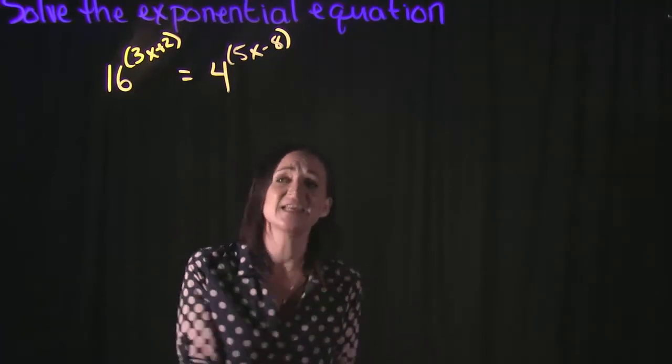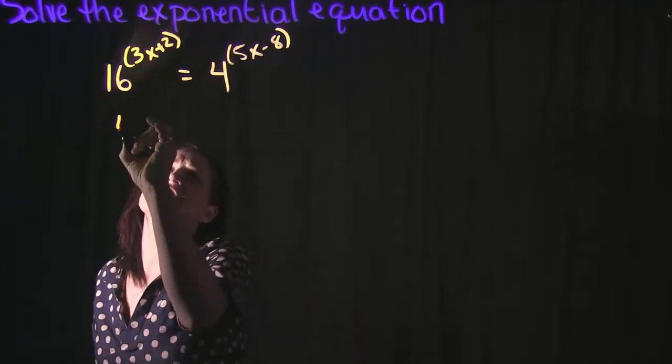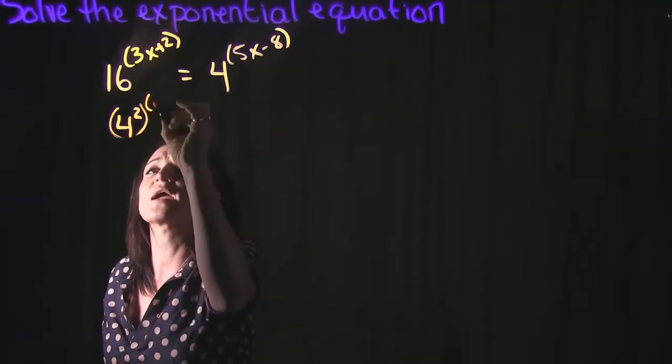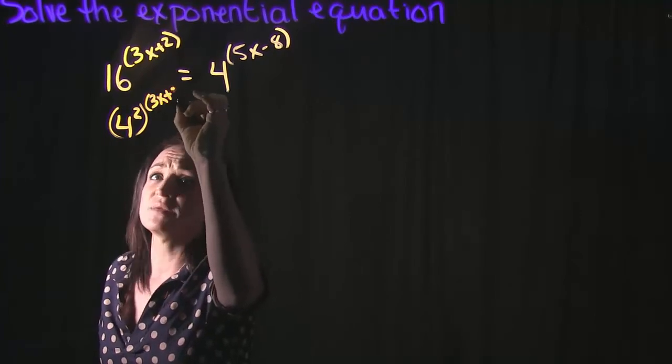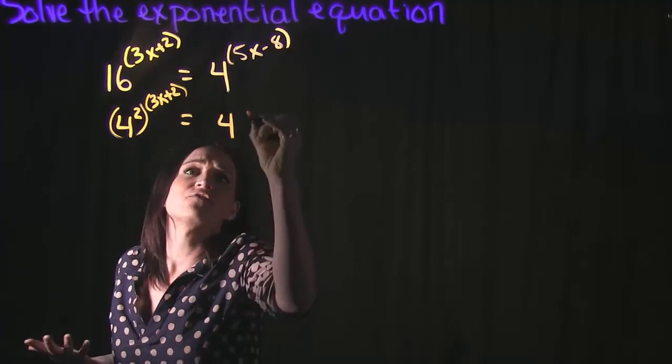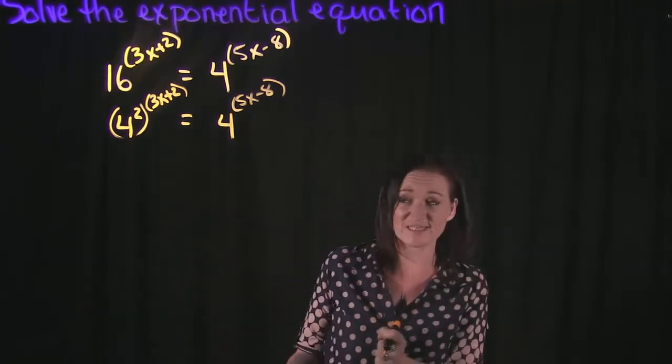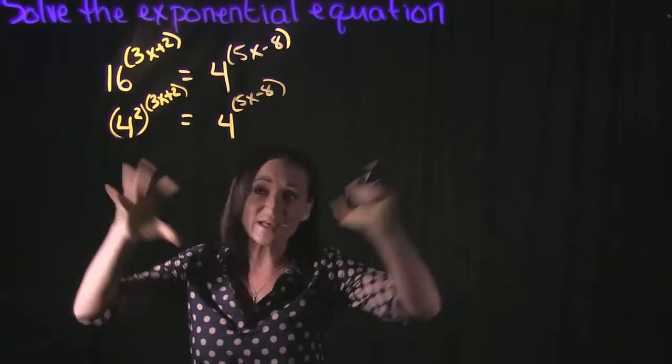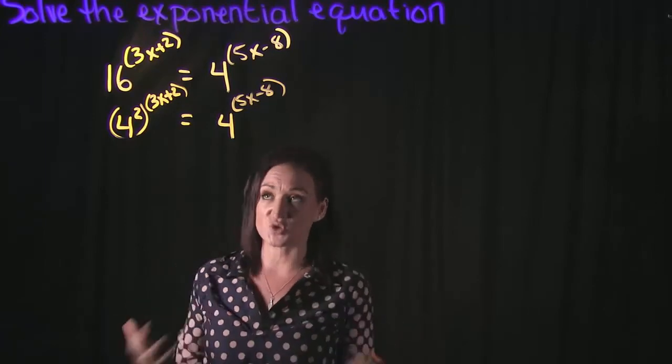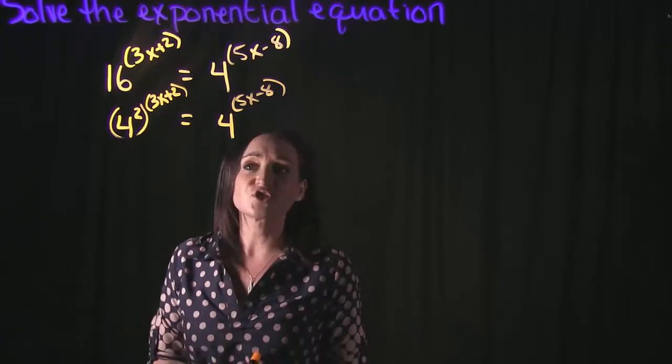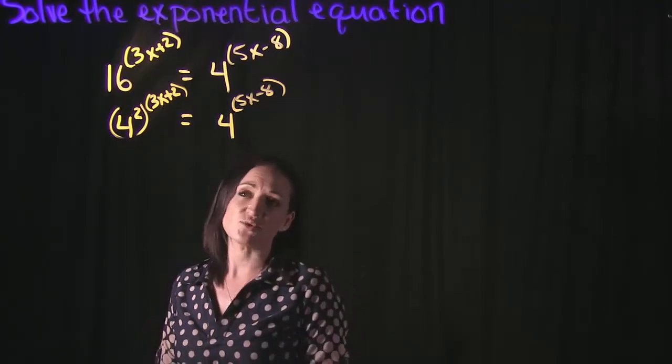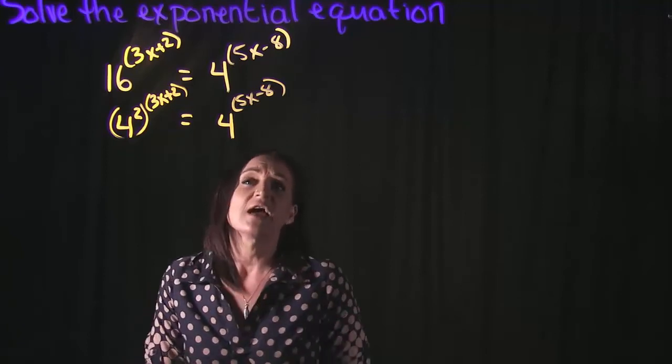If I take 16 and rewrite it as 4 squared, that allows me to get the problem to have the same bases. Now we have the same bases, so now we can set the exponents equal to each other.